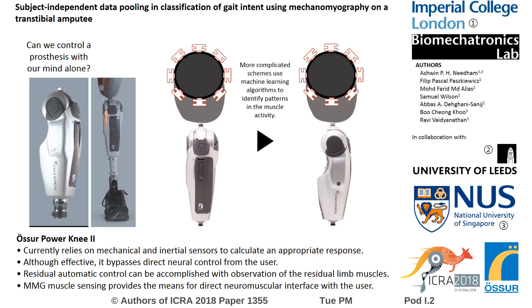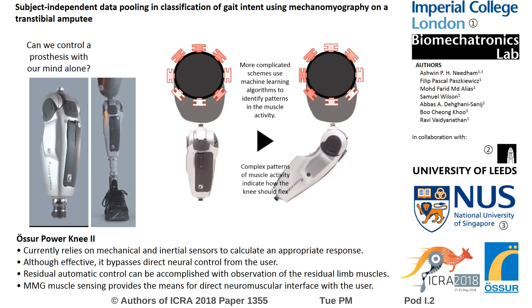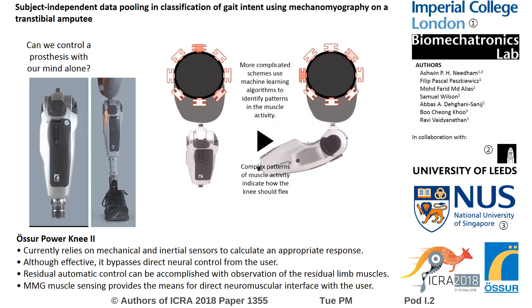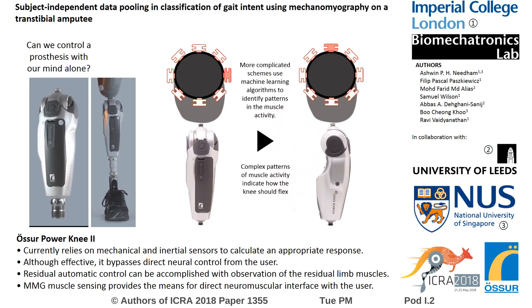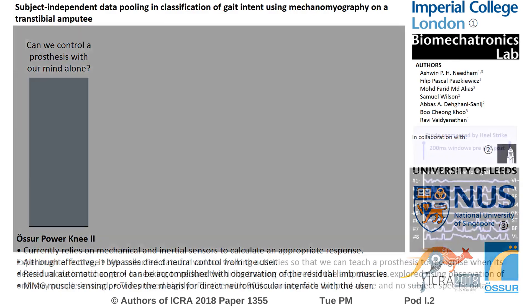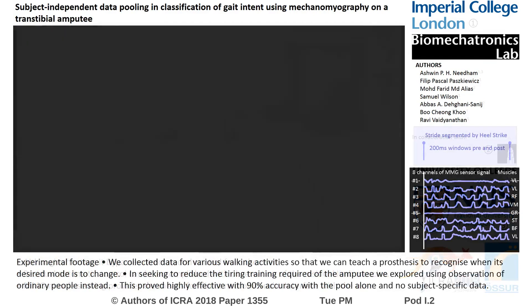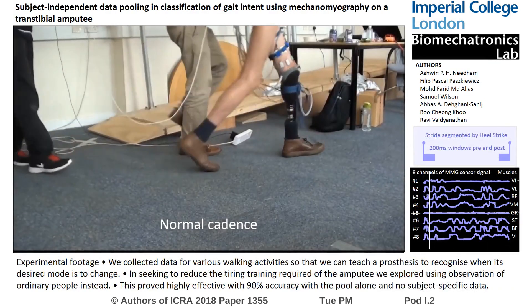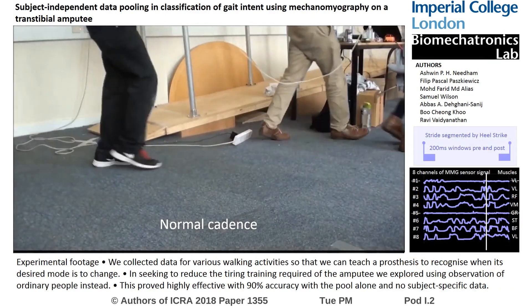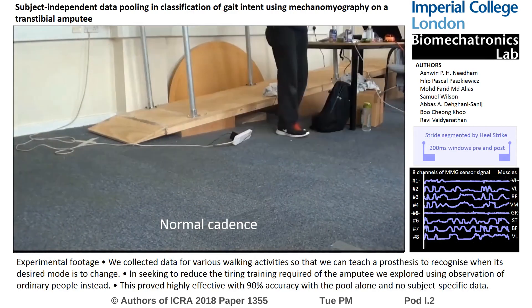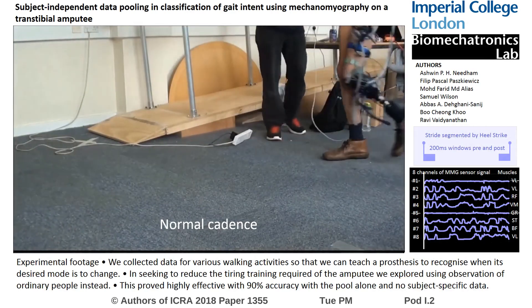This study proposes that training is conducted from a cohort of able-bodied subjects rather than the amputee. We have assessed the potential for use of subject-independent and subject-dependent pooling of data from a cohort of 12 subjects,